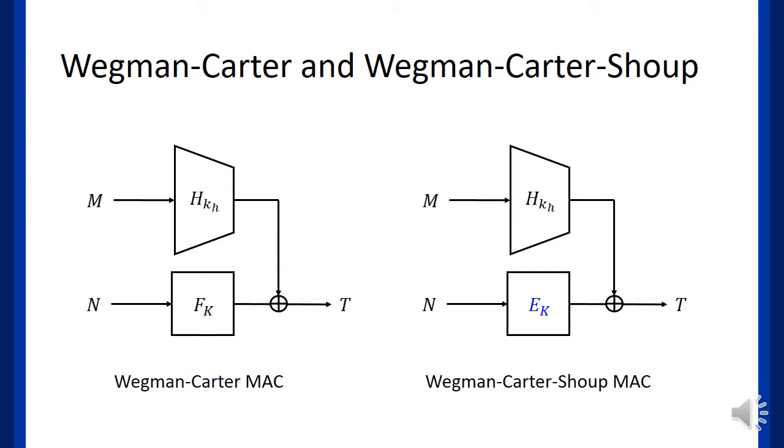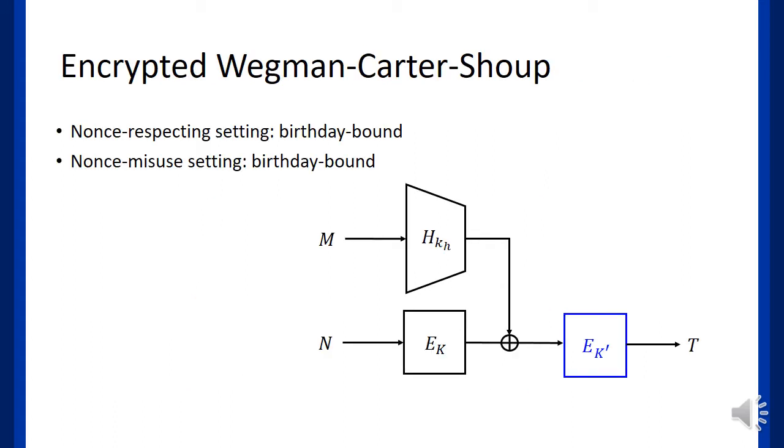To redeem the weakness of those constructions, one can use one more encryption to encrypt the output value. The resulting construction is called encrypted Wegman-Carter-Shoup, and is secure up to the birthday bound in both nonce-respecting and nonce-misuse settings.